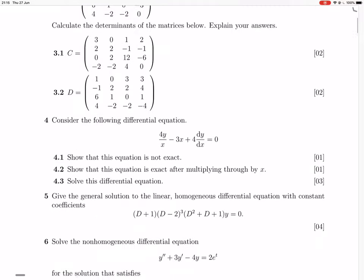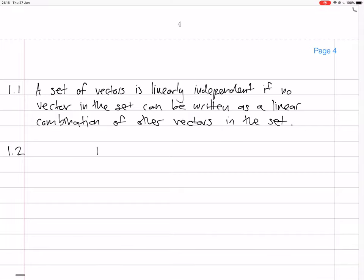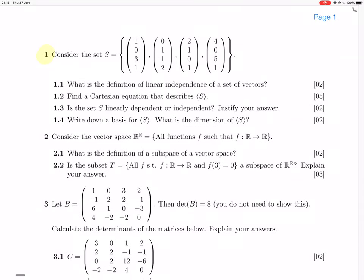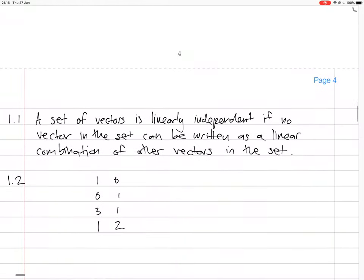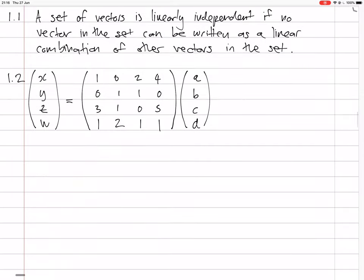So the first vector is 1, 0, 3, 1, then we have 0, 1, 1, 2, and then we have 2, 1, 0, 1, and 4, 0, 5, 1. So it's a linear combination, so these are the scalars, the coefficients of a linear combination. And then we're saying that having an arbitrary vector x, y, z, w, that is the linear combination of those three columns.